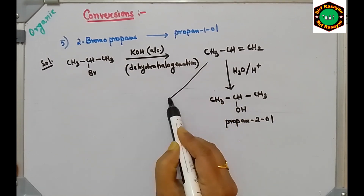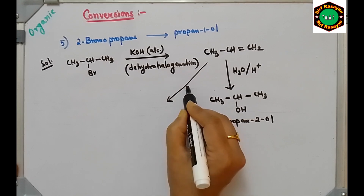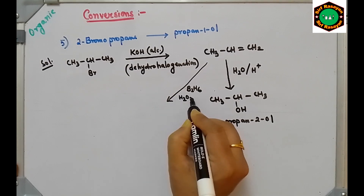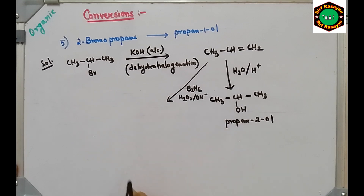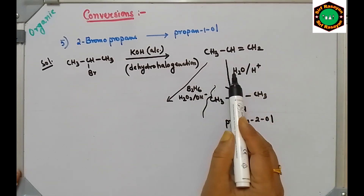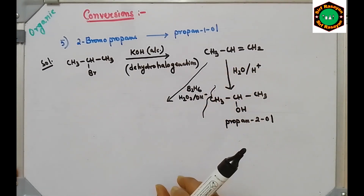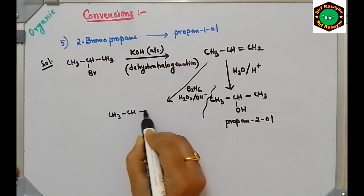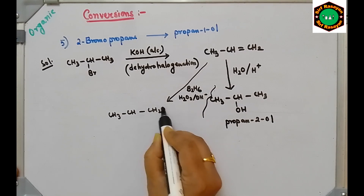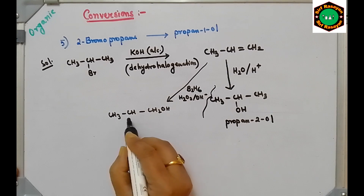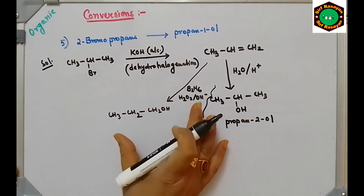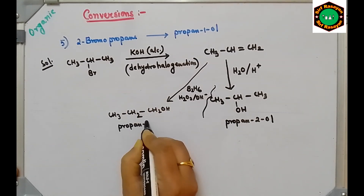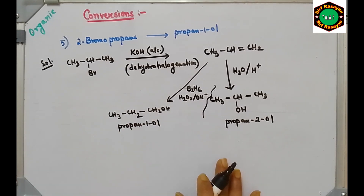If you do hydroboration with diborane (B2H6) followed by treatment with H2O2/OH⁻ (oxidation), anti-Markovnikov addition takes place — OH attaches to the carbon with more hydrogens and H attaches where fewer hydrogens are present. This gives the anti-Markovnikov product, propan-1-ol, which is our desired product.